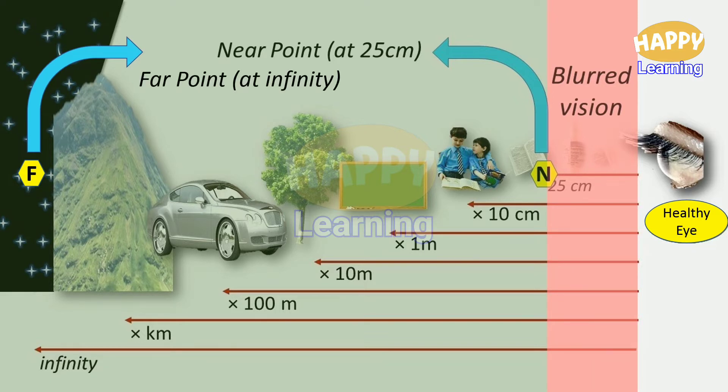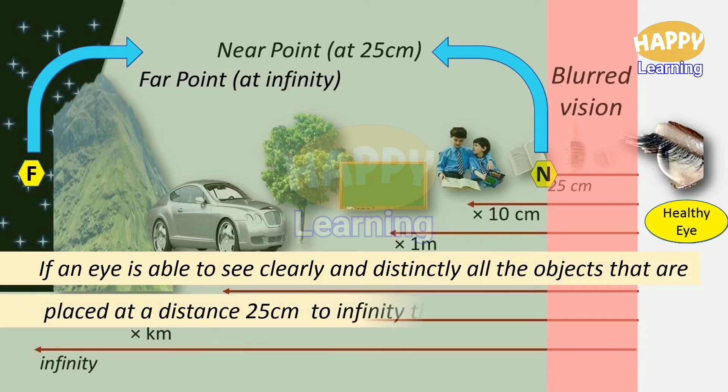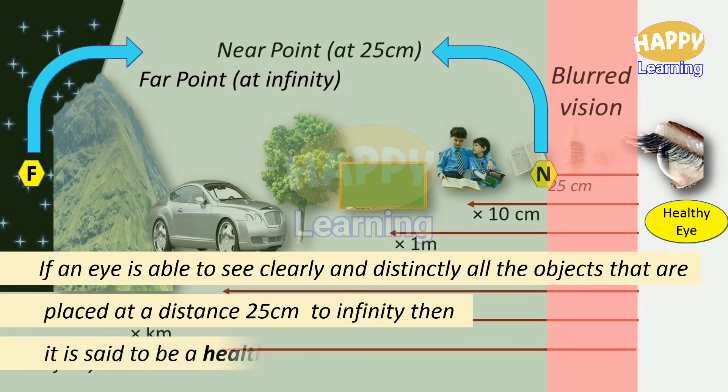If an eye is able to see clearly and distinctly all the objects that are placed at a distance 25 centimeter to infinity, then it is said to be a healthy eye.